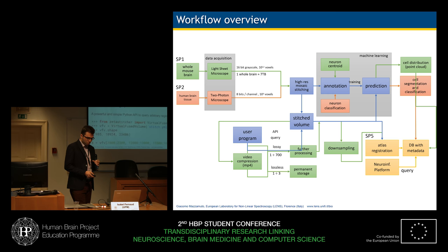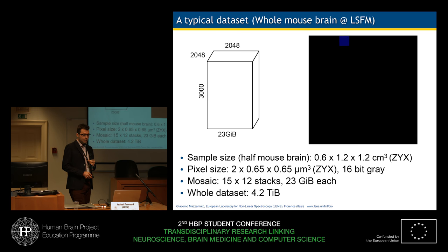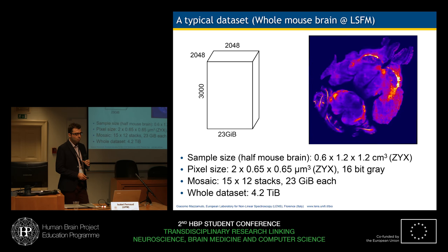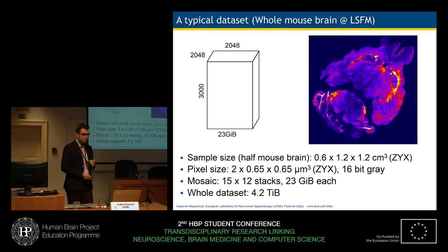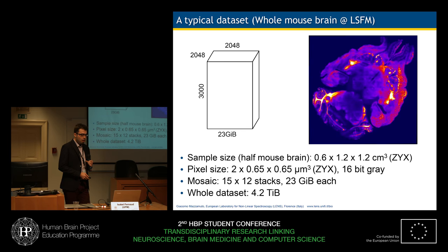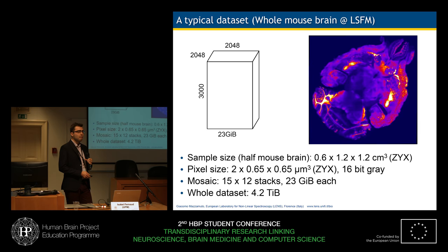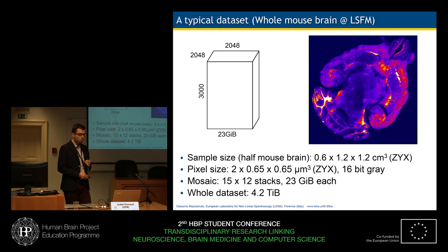To give you an example of what a typical dataset looks like: here is a whole mouse brain tomography obtained with the light-sheet fluorescence microscope. We are imaging at sub-micron resolution, so we are able to see individual neurons pretty well.